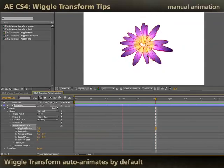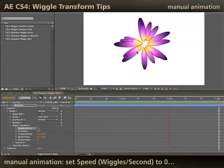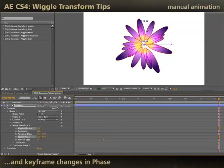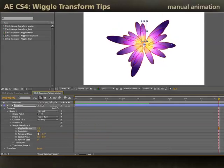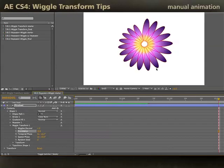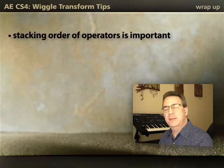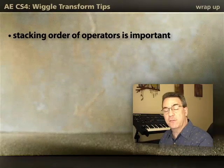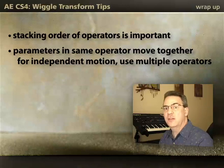Wiggle transform does automatically animate just like the Wiggly Selector for text layers. If you want to hand animate it, put the speed down to zero — now I have a frozen flower and nothing's happening. Then you can manually keyframe the phases to get your desired motion when you want it to happen. To recap: stacking order is very important — for example, whether the wiggle transform is before or after the repeater. Also keep track of what parameters you're wiggling and whether you want them coordinated or independent. If you want independent wiggles, you're going to need more than one wiggle transform operator — add as many as you need. Hope that helps. See you again later.